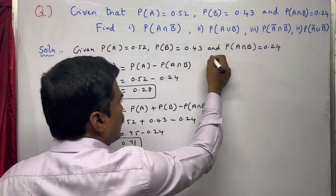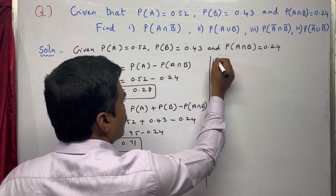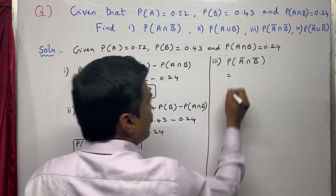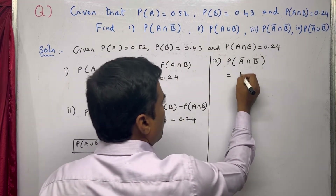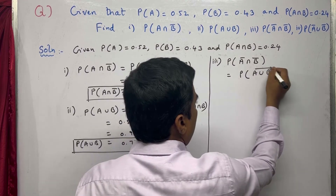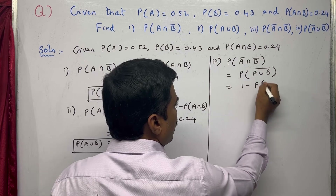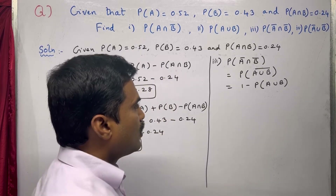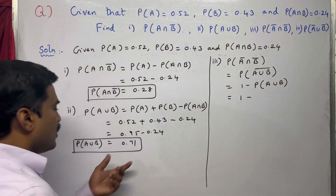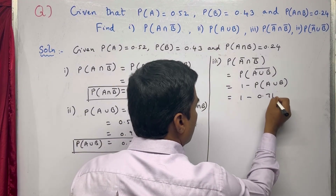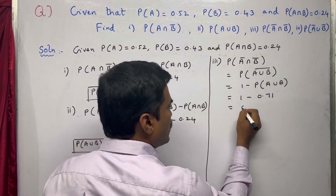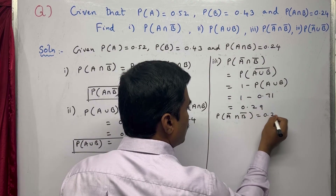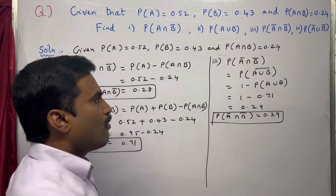The third one is P(Ā∩B̄). Using De Morgan's law, this can be written as P(A∪B) with a bar, which equals 1 − P(A∪B). We just calculated P(A∪B) = 0.71, so: 1 − 0.71 = 0.29. Therefore P(Ā∩B̄) = 0.29.